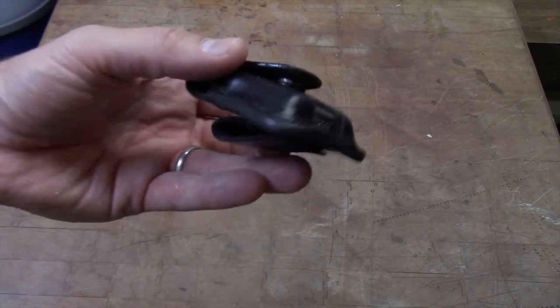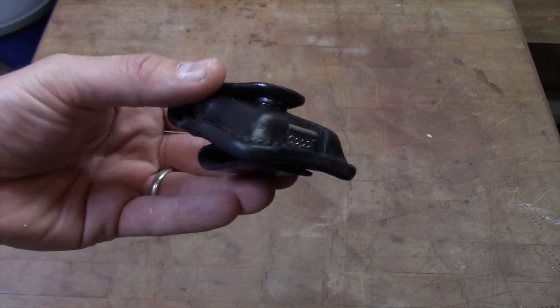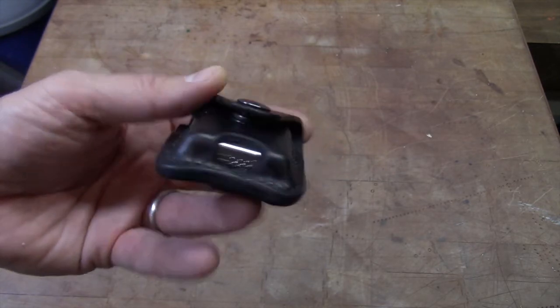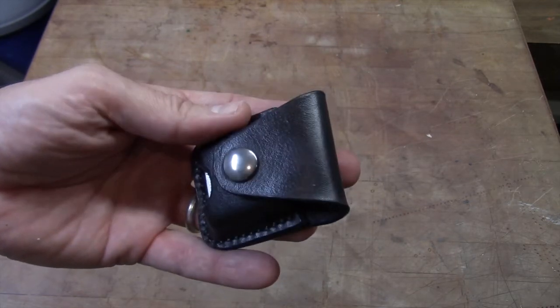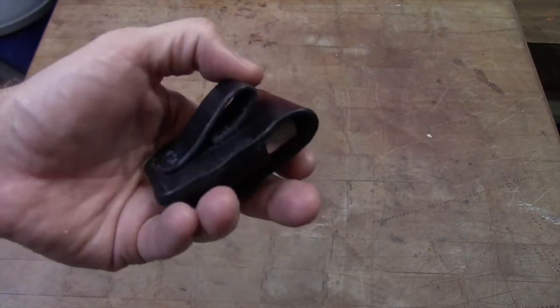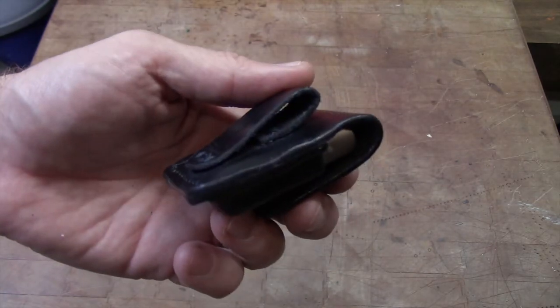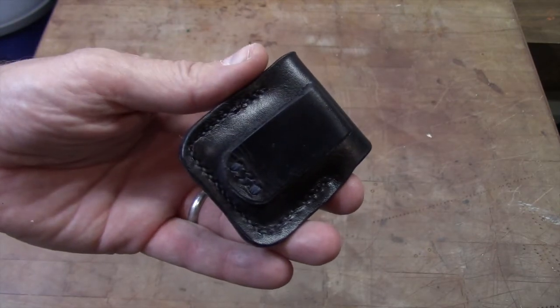So here's our finished product. As you can see, all the edges are slicked. Everything's finished up. I've got a coat of atom wax on it. There's the back belt loop fits any standard belt, so that's good.